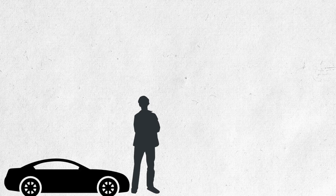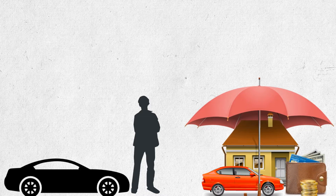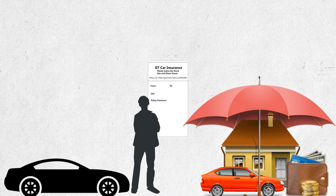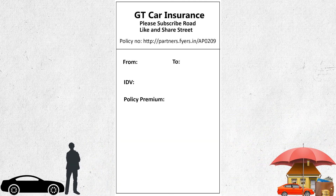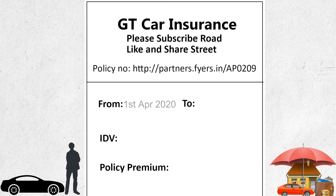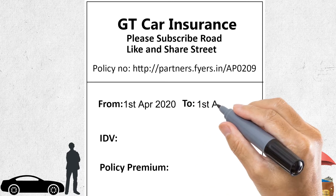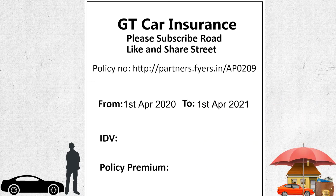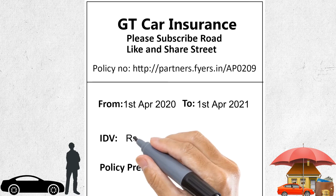Mr. Sunil has bought a car worth 10 lakh rupees. He thought of taking accidental insurance for the car and so approached an insurance company. Let us see the policy terms in simple terms. The validity of the policy will be one year from the payment — let's suppose the validity is till 1st April 2021. The IDV, Insured Declared Value, is fixed for 9 lakhs.